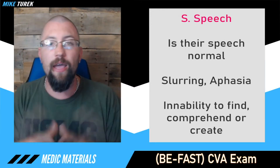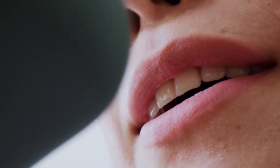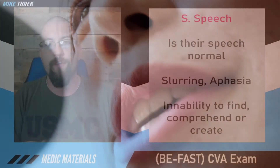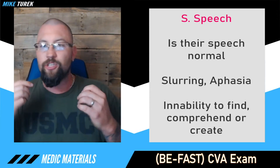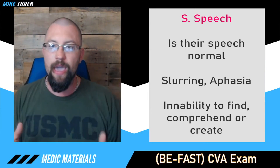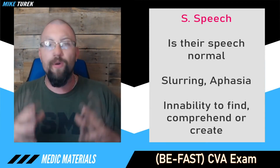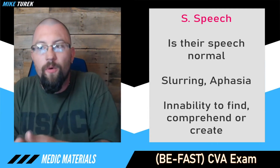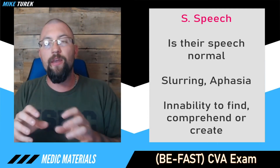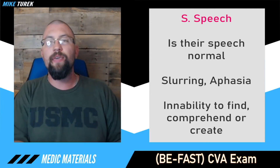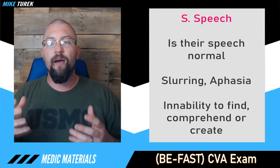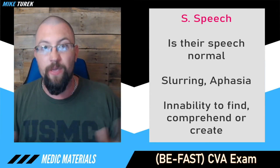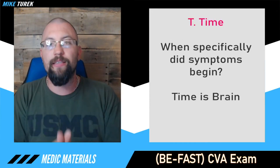S is for Speech. We evaluate whether their speech is normal — are they slurring, are they aphasic? There are three types of aphasia to keep note of. First, the inability to find words — they know what they want to say but can't figure it out, so they might say 'ice cream truck' when trying to name their street. Second, the inability to comprehend speech — they can't understand what you're telling them. Third, the inability to create speech — the slurring, garbling, mixed words, or a complete inability to formulate words at all.